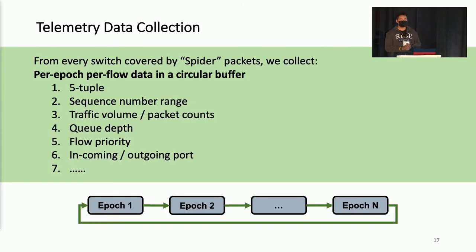After the spider packet was sent to multiple switches, those switches will report their maintained telemetry data. This telemetry data is maintained in a circular buffer that will outdate data when time goes by. Those data includes five-tuples, sequence number range, traffic volume, queue depth, flow priority, incoming and outgoing ports, and you can also add some customizable data if you want.